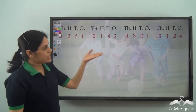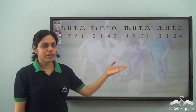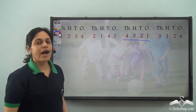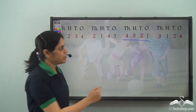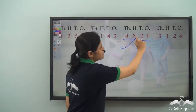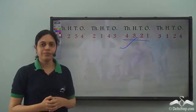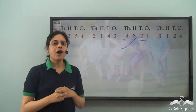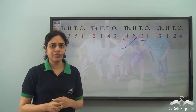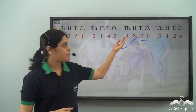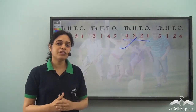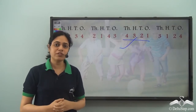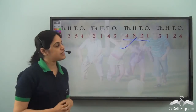Since this number had 4 as the thousands digit, it was the greatest number. But if you ever play such a game, how do you ensure that you are the winner? Is writing the biggest digit in the thousands place enough to ensure that you win?